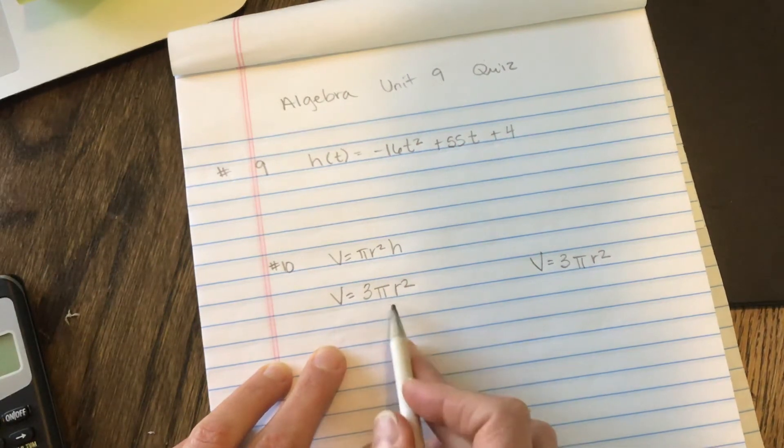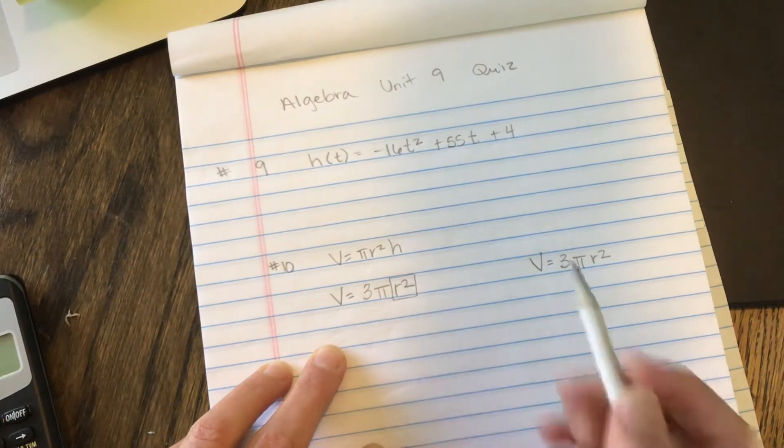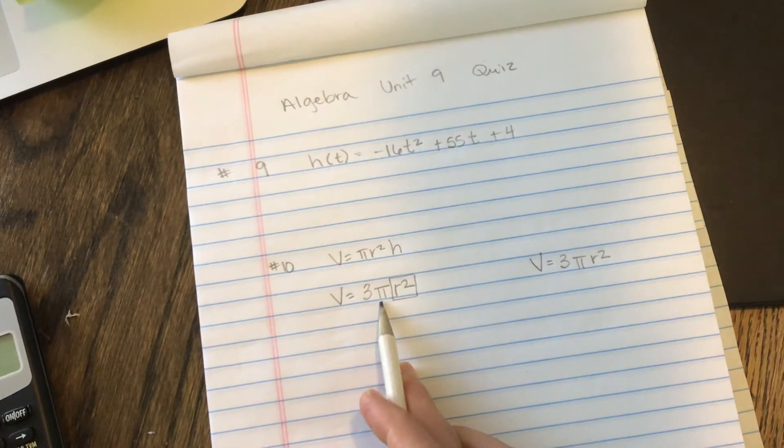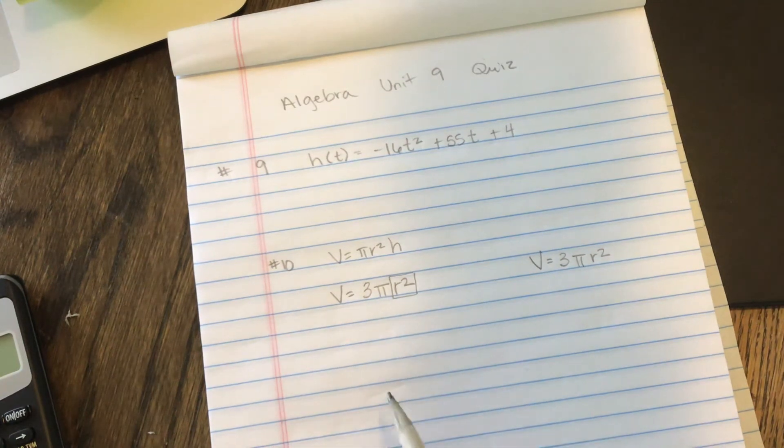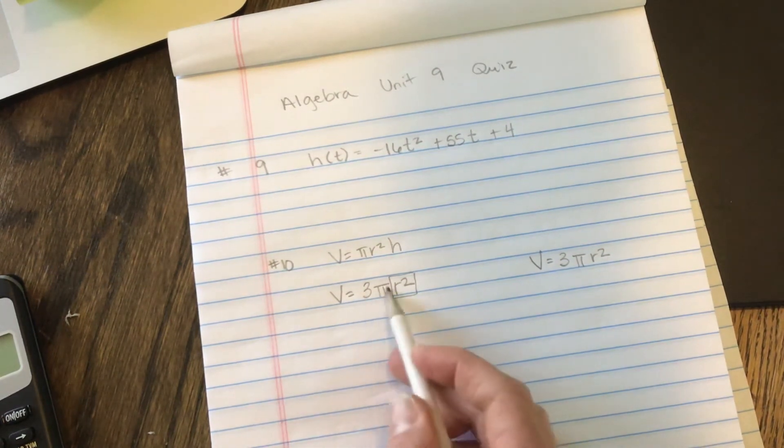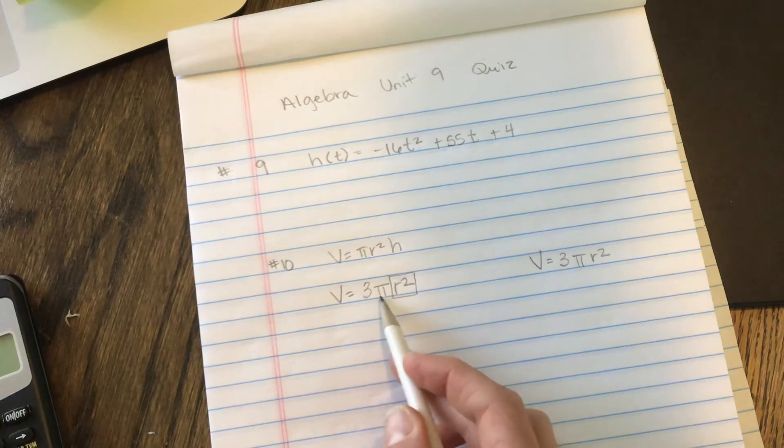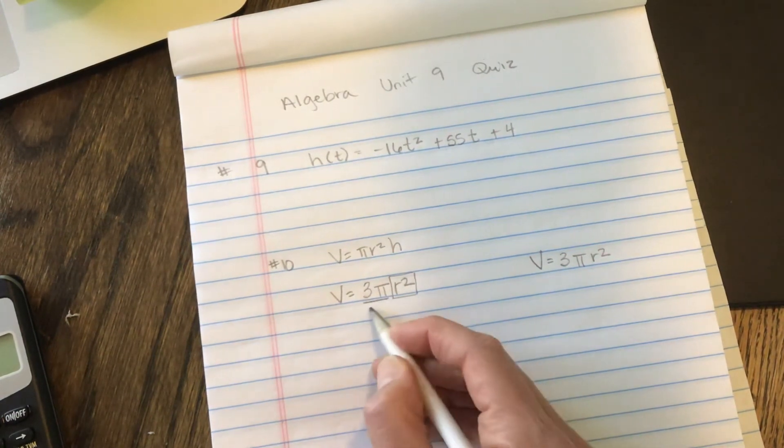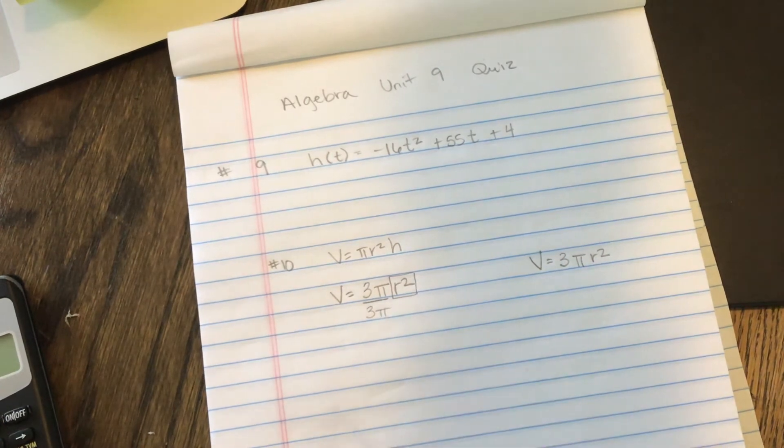So let's solve for R. And this is something we kind of all struggle with. But if we want to solve for R, think about pi. Pi is just a number, it's 3.14, right? So if I multiply those, we get 9.42. But pi is the best way to write it because it's irrational, it goes on forever. So I can treat this as a whole.